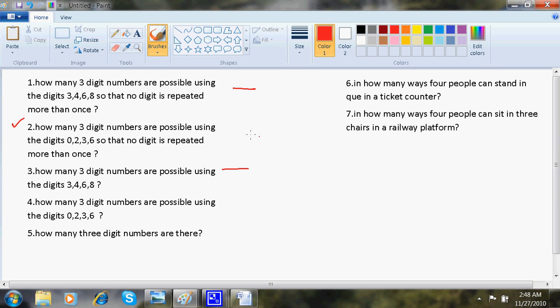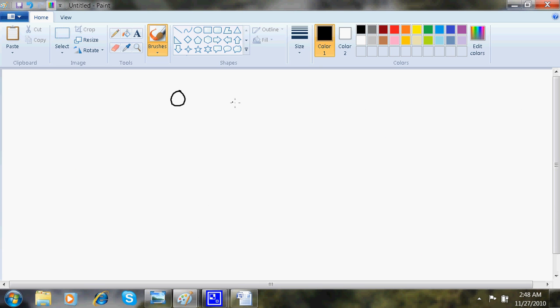How many three-digit numbers are possible using the digits 0, 2, 3, 6 so that no digit is repeated more than once. So I am left with 0, 2, 3, 6 and I want to make three-digit numbers. Now what are the circles? Basically the circles are for places.